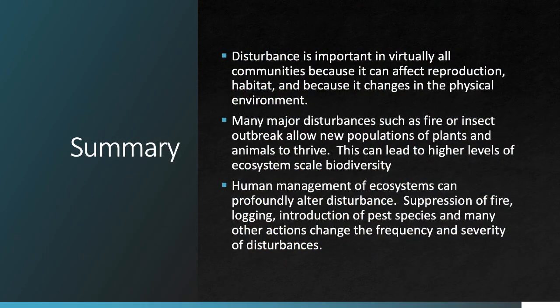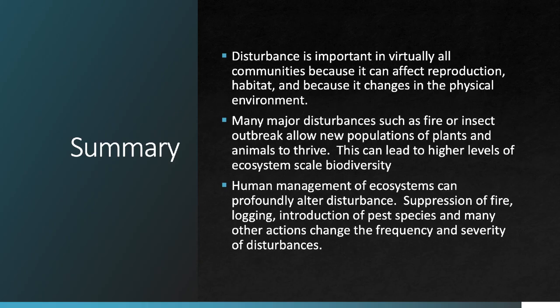To summarize, disturbance is important to virtually all communities because it affects biological processes such as reproduction, changes habitat structure, and changes the physical environment of the system. Major disturbances such as fire or insect outbreaks can allow new populations of plants and animals to thrive, sometimes leading to higher ecosystem-scale biodiversity. Human management and human-caused changes to the environment can profoundly alter disturbance frequency and intensity — through fire suppression, logging, or introduction of invasive or pest species. The main takeaway is that change is a normal part of how plant and animal communities function; the key question is whether those changes are desirable and whether they fundamentally shift the types of species present.